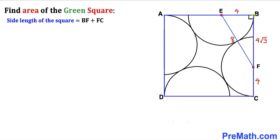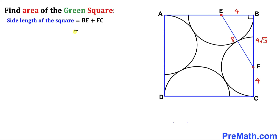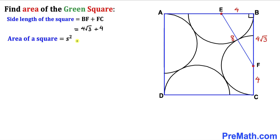So the whole side length of this square is going to be the sum of these two values: 4√3 plus 4. Therefore the side length of this square is 4√3 + 4. Now let's recall the area of a square formula: Area = s², where s represents the side length of this square.